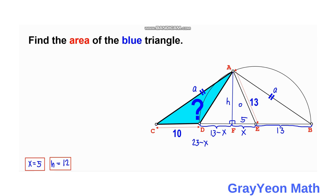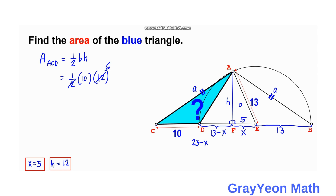Now for the final step: since we have the height and the base, the area of triangle ACD equals one-half times base times height. That is one-half times 10 times 12. Simplifying, 12 over 2 gives us 6, so the area is 6 times 10 equals 60 square units.